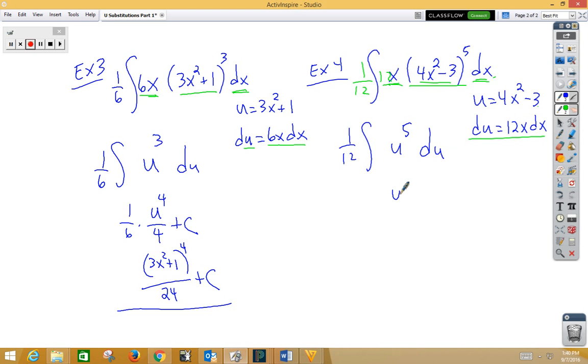Here we get u to the fifth. So we have u to the sixth over six plus c times a one twelfth. Now we know it's not u. We know that it's 4x squared minus 3 to the sixth power over six times twelve is seventy-two plus c.